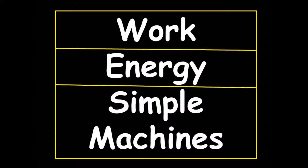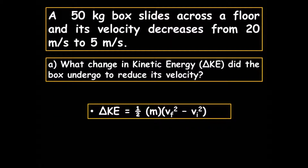Have your calculators out, and if you have any questions, write them down and see me the next day. A 50 kilogram box slides across the floor and its velocity decreases from 20 meters per second to 5 meters per second. What change in kinetic energy did the box undergo to reduce its velocity? Listed here is the equation for the change in kinetic energy. Please note that in the parentheses it says V-final squared minus V-initial squared — it is a difference of squares. This is a major mistake that students make.